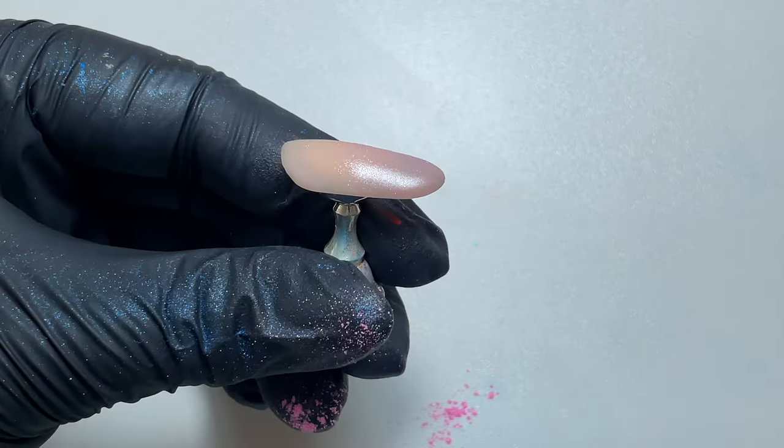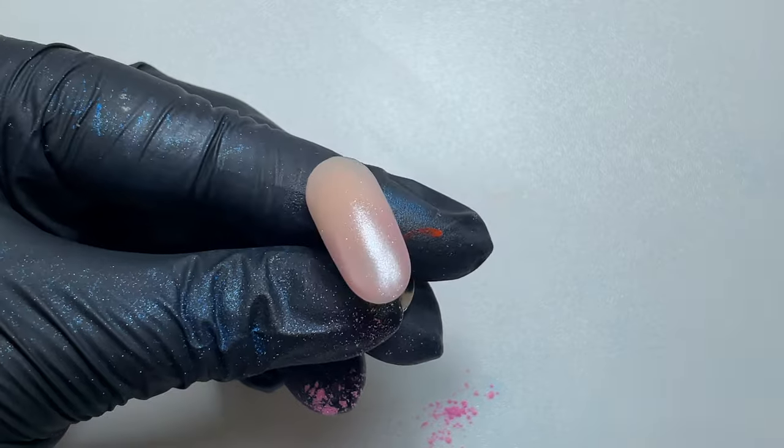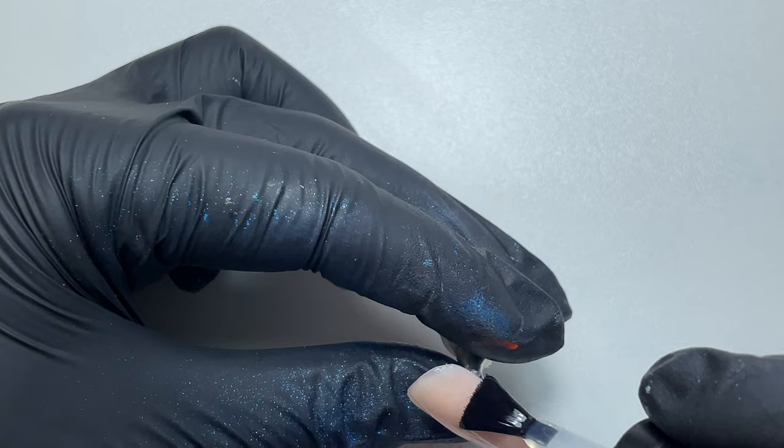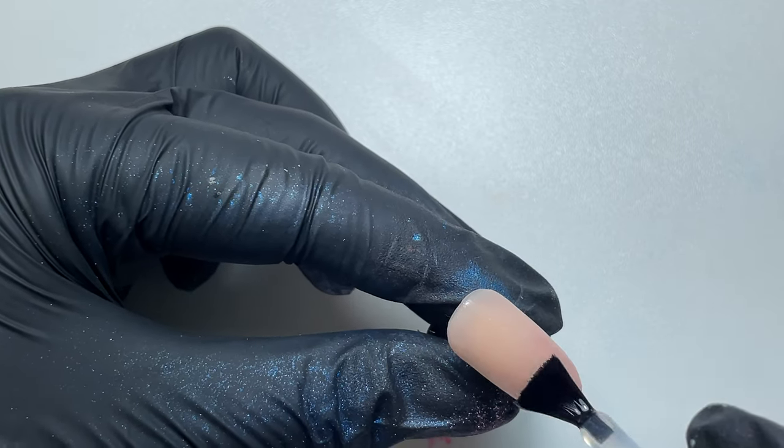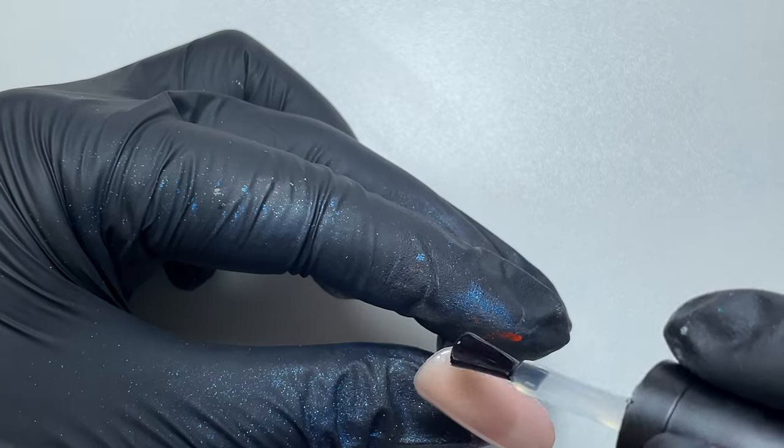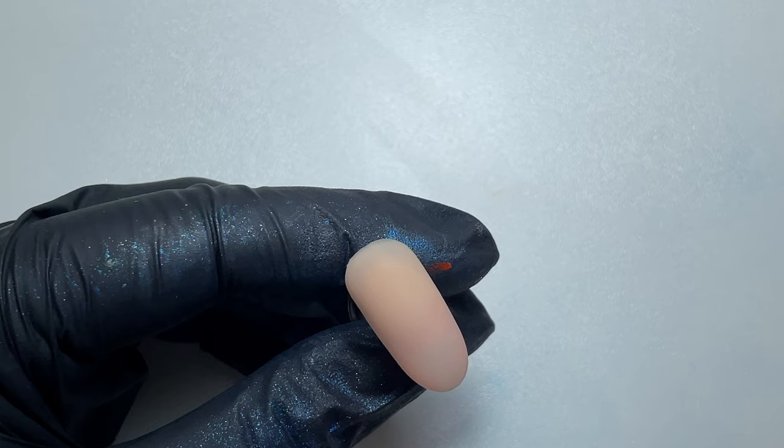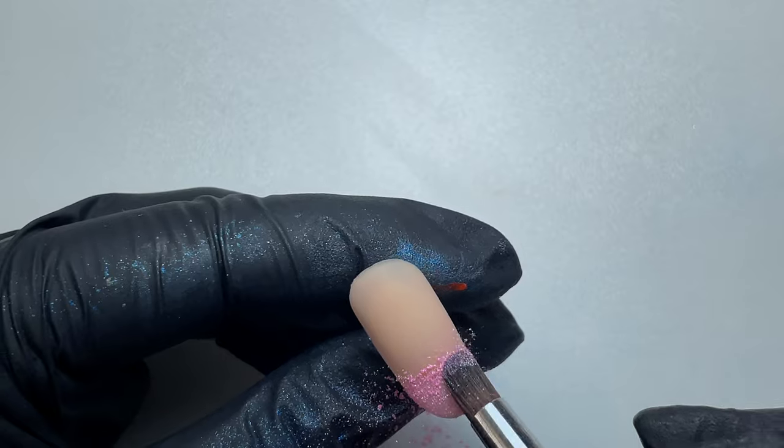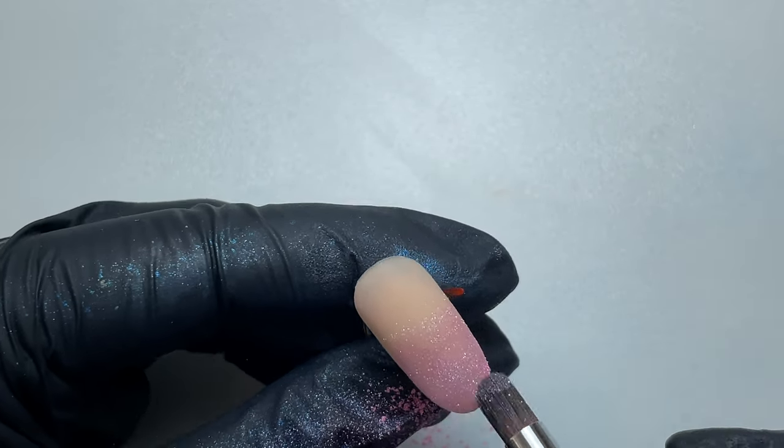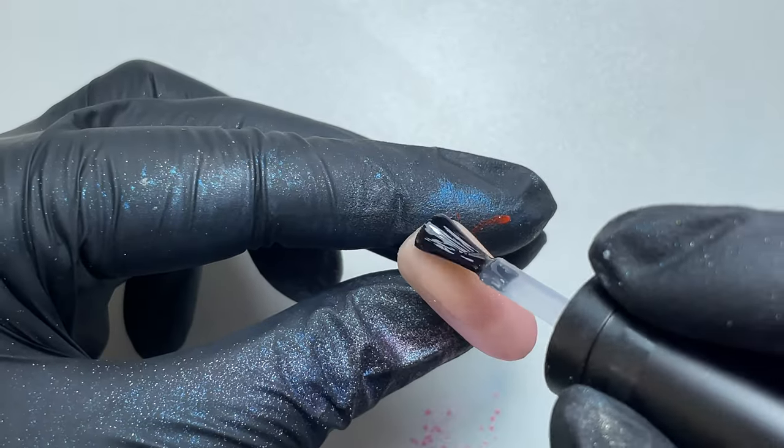Once you're happy with how high the pigment goes up the nail plate, or the nail tip in this case, you can go in with another layer of matte top coat and then we can cure that for 60 seconds and apply another layer of pigment. I'm going to focus the product more towards the tip of the nail rather than the middle or the top, just because I want the tip to be the most pigmented.